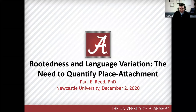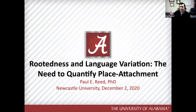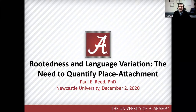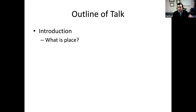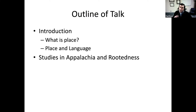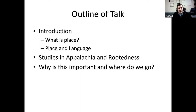My term for place attachment is 'rootedness.' This is a fun term because growing up around a lot of plants and trees, the idea of being rooted and how important the root system is really appealed to me. I'll talk about what place is and why it's important, place and language, some of my work in Appalachia, and where we go from here.